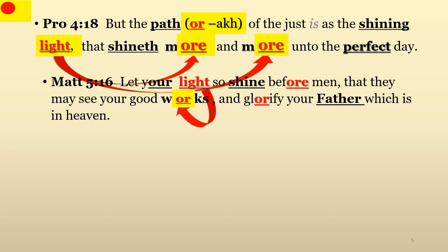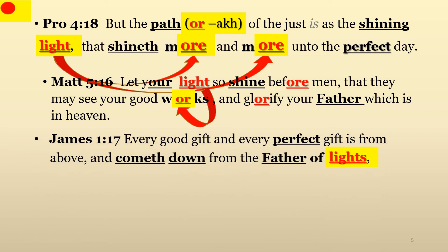Once again, we see the Hebrew word OR within the framework of works, which shines forth for men to see and brings glory to our Heavenly Father. And speaking of our Heavenly Father, in James chapter 1, verse 17, it declares, 'Every good gift and every perfect gift is from above and comes down from the Father of lights.' Our Heavenly Father, who is the Father of lights, is perfect in every way and has perfect gifts to give those who walk in His light to help them also become perfect.